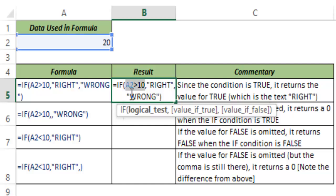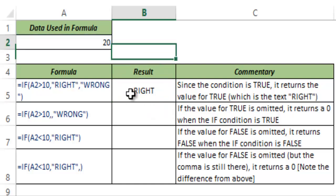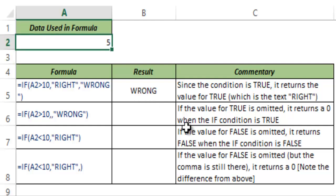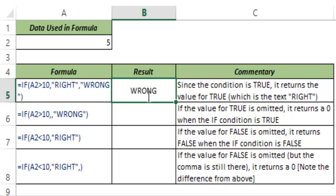What happens if I change this value and put 5 here? It returns 'wrong' because now this condition is false, and hence IF returns the value for false.